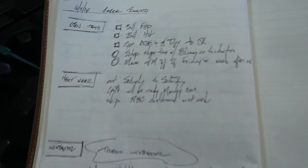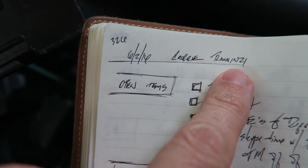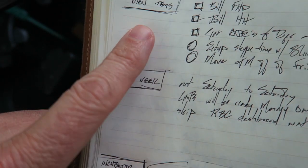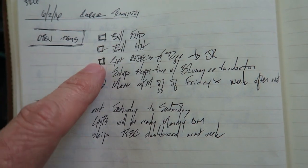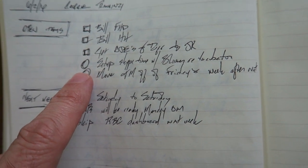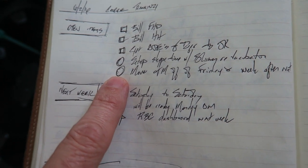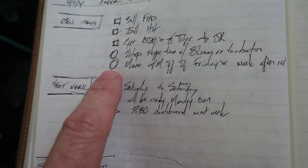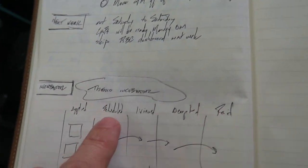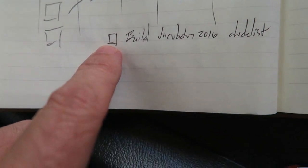Every page starts the same way: a page number at the top, the date, and the name of the person and what we're talking about. I use little callouts to highlight different sections. Under 'open items,' squares represent things I have to do, and circles represent things the other person has to do — so if meeting with a client, circles would be their commitments. I also draw diagrams during or after the meeting to think through problems visually.